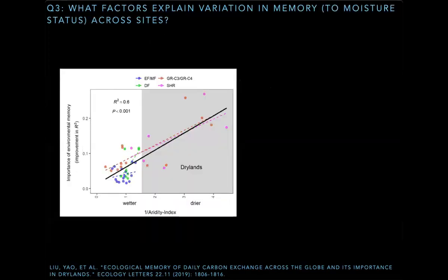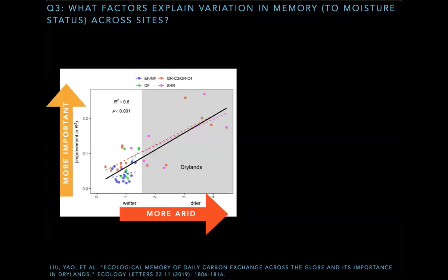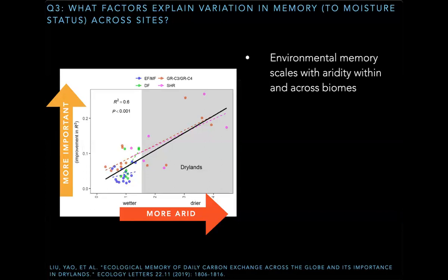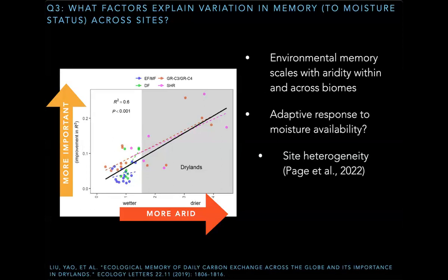What factors explain environmental memory? On the x-axis is an aridity gradient from wetter to drier, and on the y-axis the importance of environmental memory. We found that environmental memory scales with aridity both within and across biomes. This convergence of response across biome types could indicate memory being an adaptive behavior to moisture availability, rather than being governed directly by vegetation traits. John's recent work has reviewed more granularity in this statement, so check out his poster.